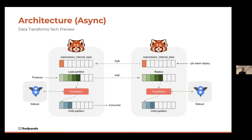Let's look at this from an architectural perspective. Typically you'd have three brokers in your cluster, but it's easier to visualize with two. Here we have two Red Panda brokers on separate servers. We have our co-processor internal topic — we've written our data transform and deployed it into Red Panda via the Raft replication mechanism. This is then copied out to every broker, so it's available for running on every broker.